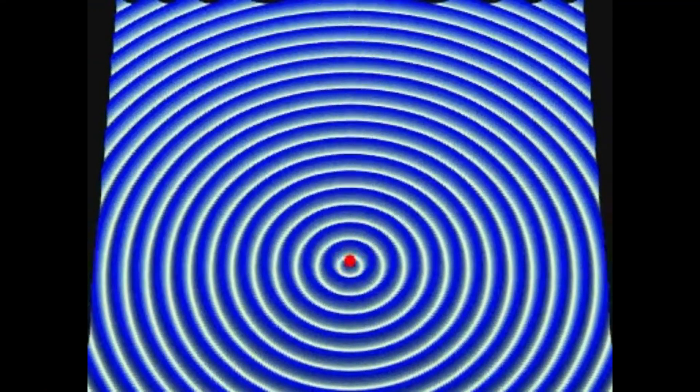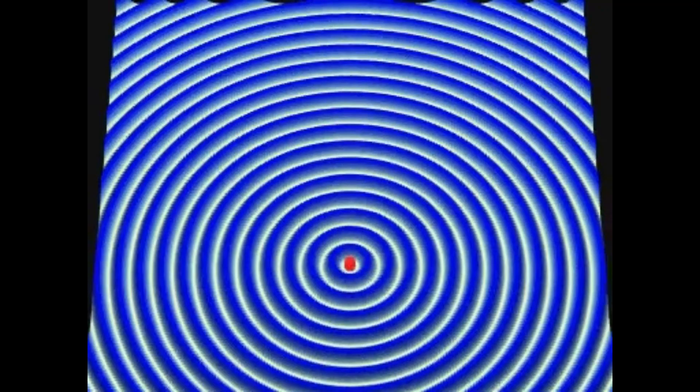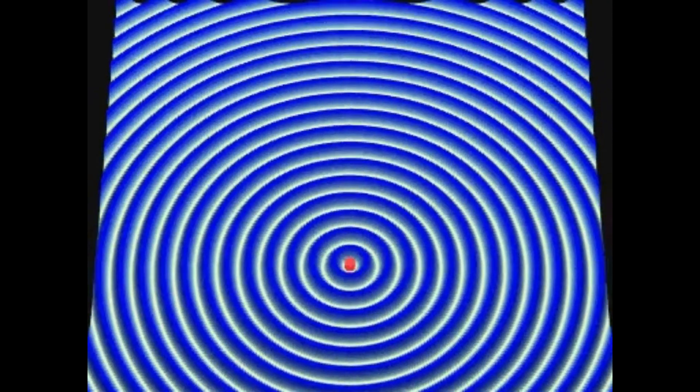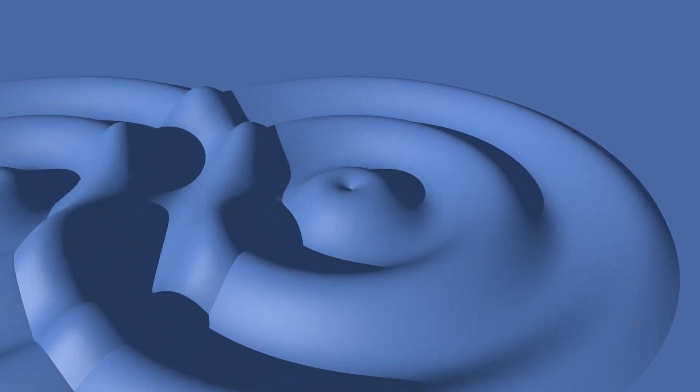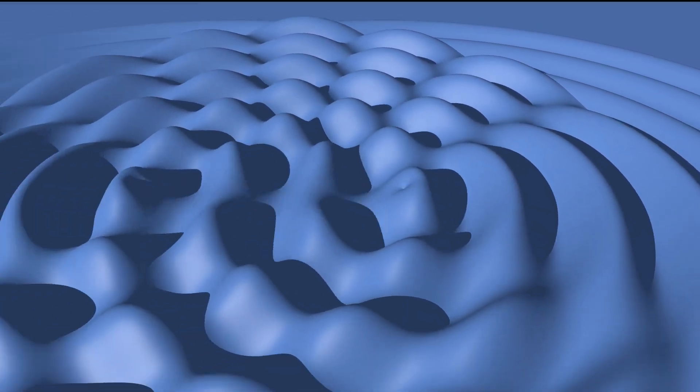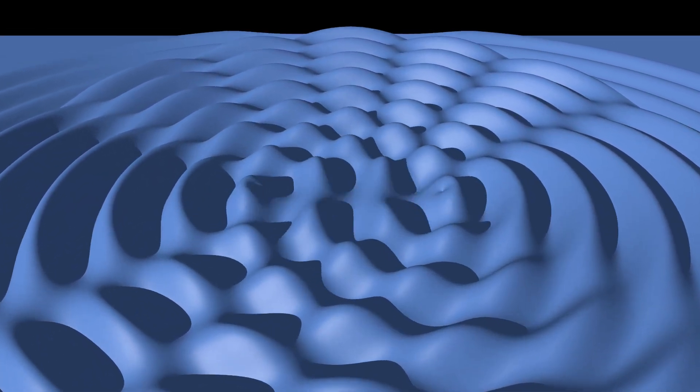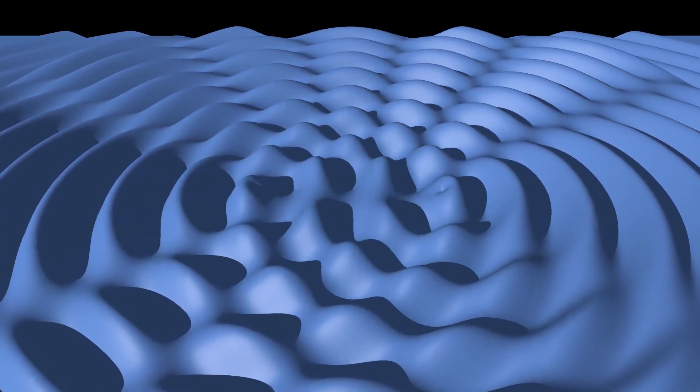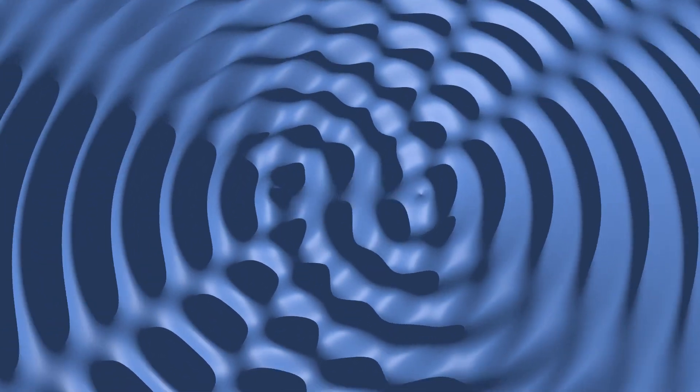Now, get this. Even empty space isn't really empty. In quantum field theory, even when no particles are present, these fields are still there, and they are still active. Quantum uncertainty tells us that fields can't sit still. They fluctuate, even in a perfect vacuum. This fluctuation gives rise to virtual particles, particles that pop in and out of existence for tiny fractions of a second.